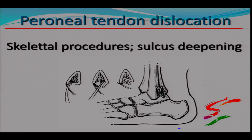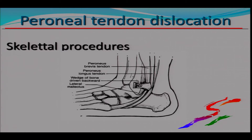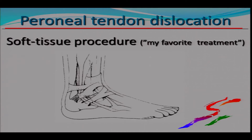Deepening the sulcus is quite difficult to do in real life — much easier to draw in a picture than to perform in the wound. Another approach is the RICE procedure, which may be the easiest skeletal option. But it has been reported to have complications like dislocation of the screw and dislocation of the bone piece. So my favorite treatment for this is a soft tissue procedure.